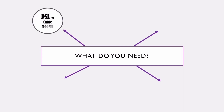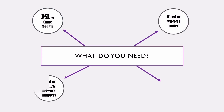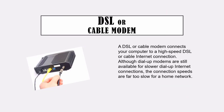You need 4 things. Number 1 is DSL or cable modems. Second is a wired or wireless router. Third is wired or wireless network adapters. Lastly, the Ethernet cabling. A DSL or cable modem connects your computer to a high-speed DSL or cable internet connection. Although dial-up modems are still available, their connection speeds are far too slow for a home network. So if you have internet in your home, you will have a DSL or cable modem.